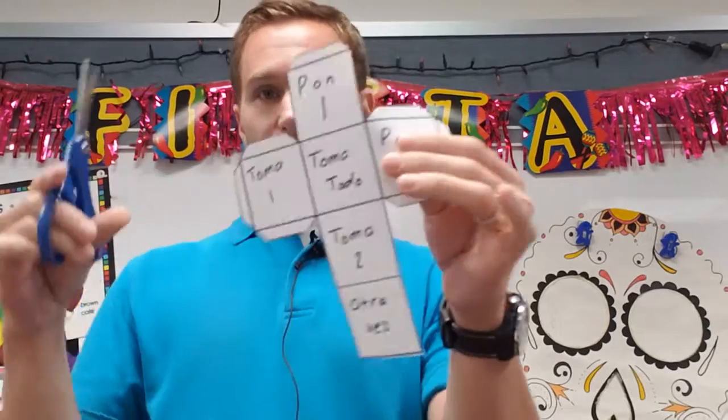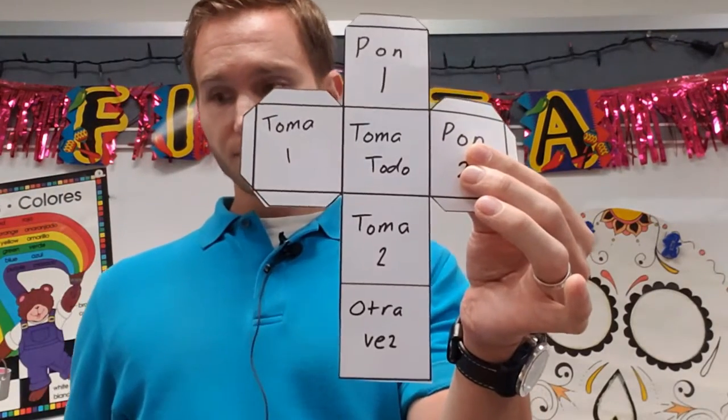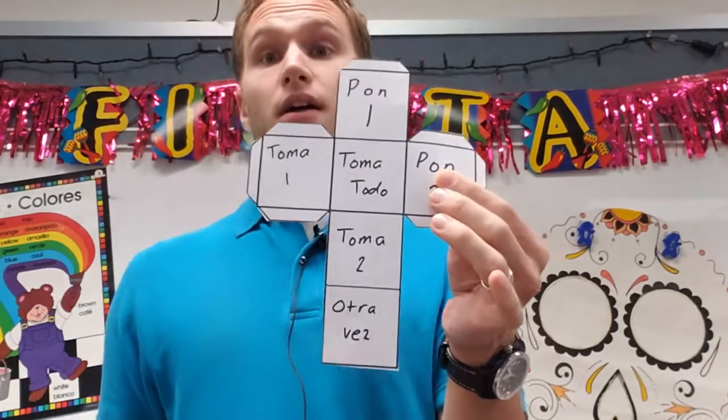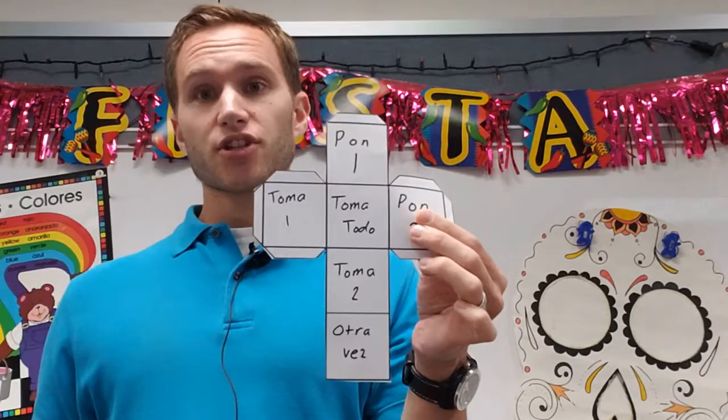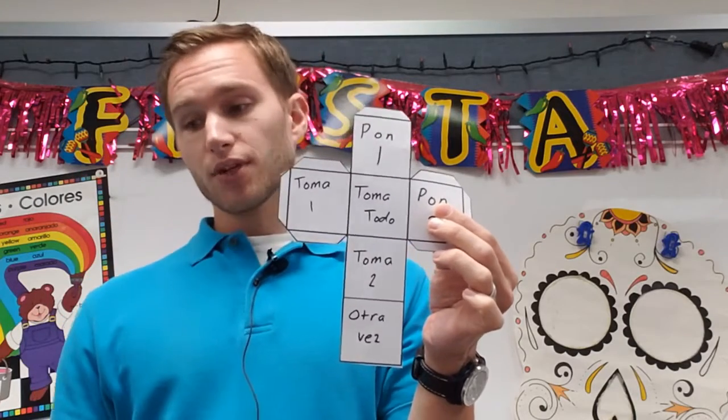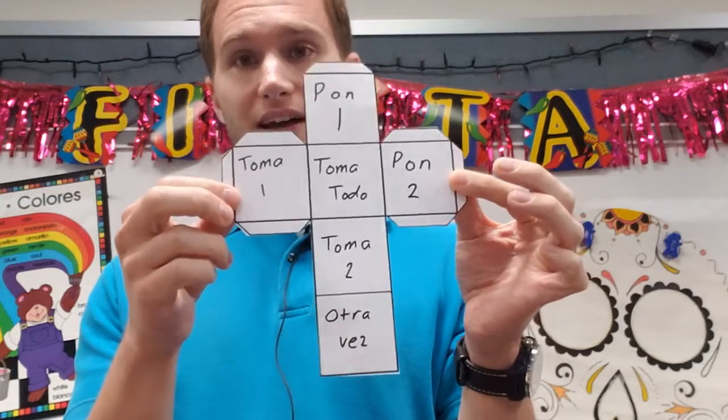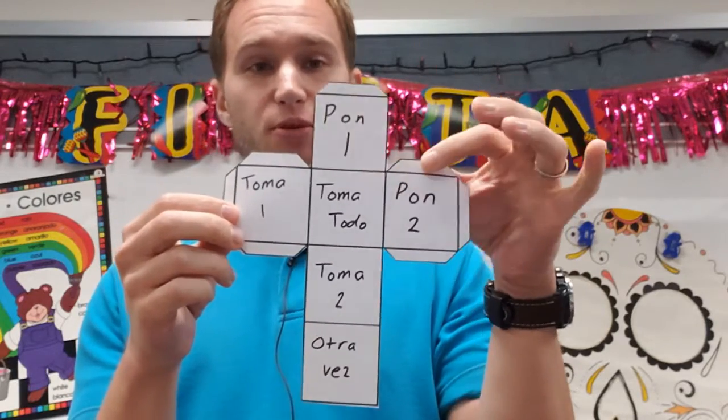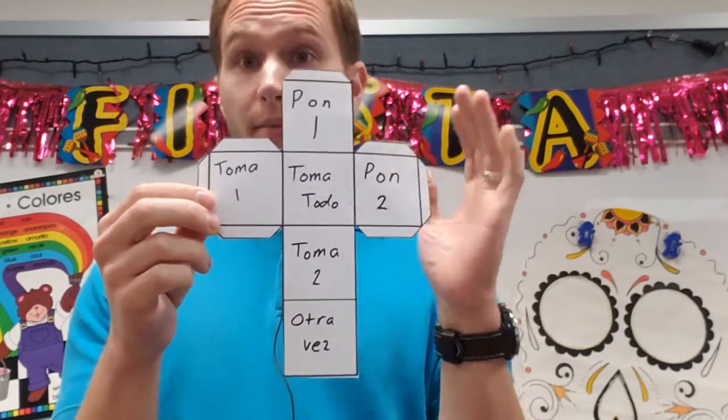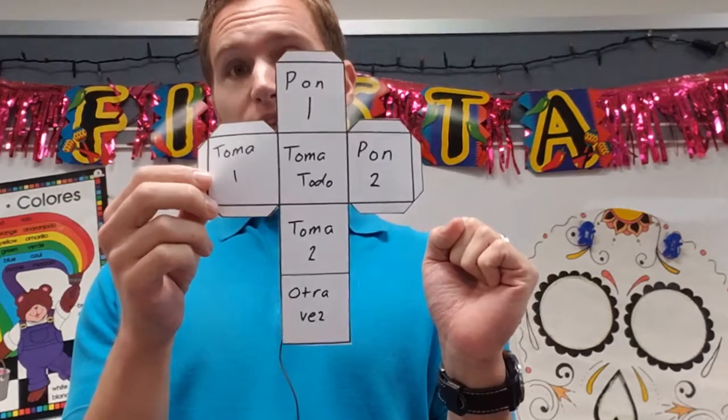I'm left with this piece. Instructions number two says fold along all lines. So, all of these lines that I have between the squares, between the trapezoids and the squares, I'm going to fold. Let me show you what that looks like.